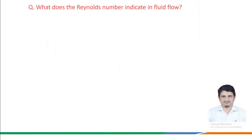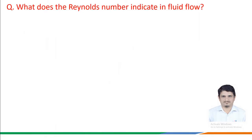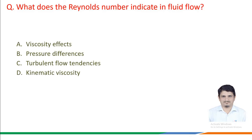Next question: what does the Reynolds number indicate in fluid flow? Options given are: A. Viscosity effects, B. Pressure differences, C. Turbulent flow tendencies, D. Kinematic viscosity.